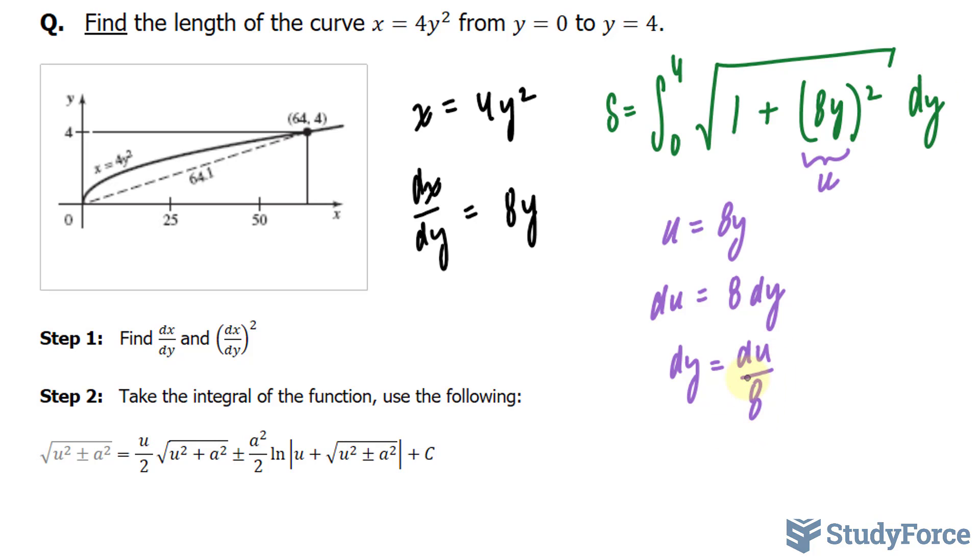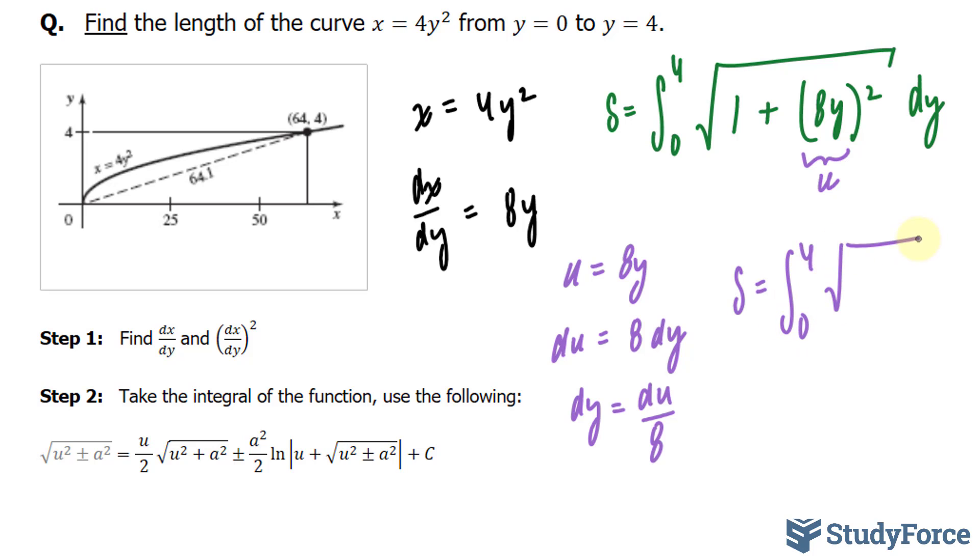I'll replace this dy with du over 8, and look what happens. We end up with s is equal to the integral between 0 and 4, 1 plus u to the power of 2, and this becomes du over 8. I can pull out 1 over 8. That doesn't need to be integrated.